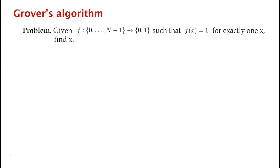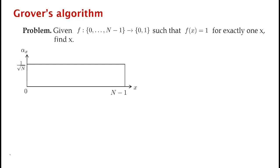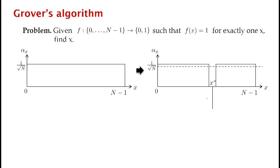Let me try to show you how Grover's algorithm works given these two primitives. Initially we know nothing at all about the marked element, so we start with all our amplitudes equal and equal to 1 over square root N. Then we do a phase inversion — so now the marked element, instead of having amplitude 1 over square root N, has amplitude minus 1 over square root N.